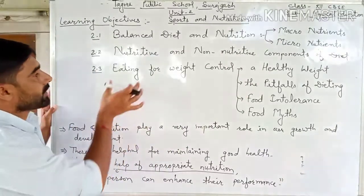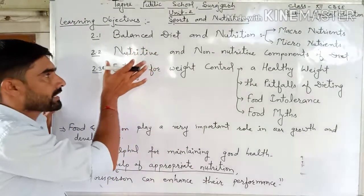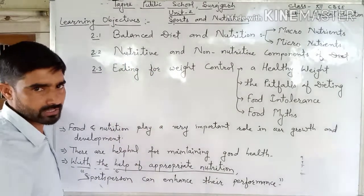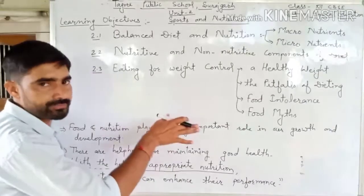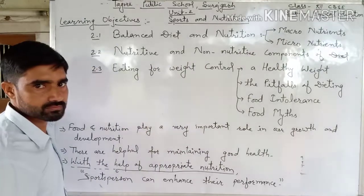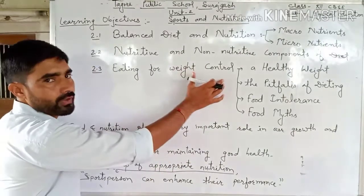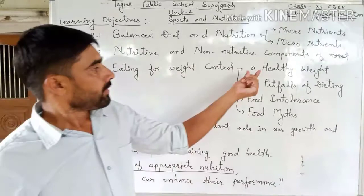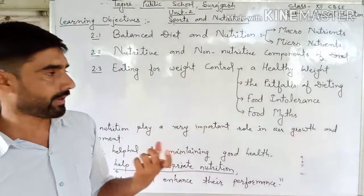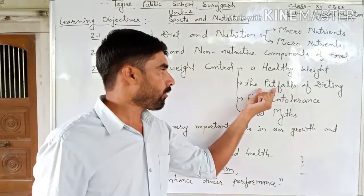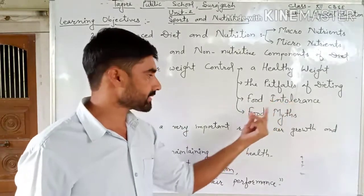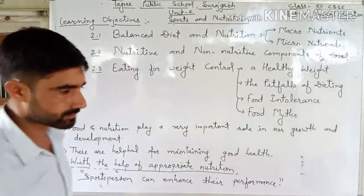The next and last learning objective of this chapter is eating for weight control. In this learning objective we will discuss about weight control, a healthy weight, what do you mean by a healthy weight, pitfalls of dieting, food intolerance, and food myths.